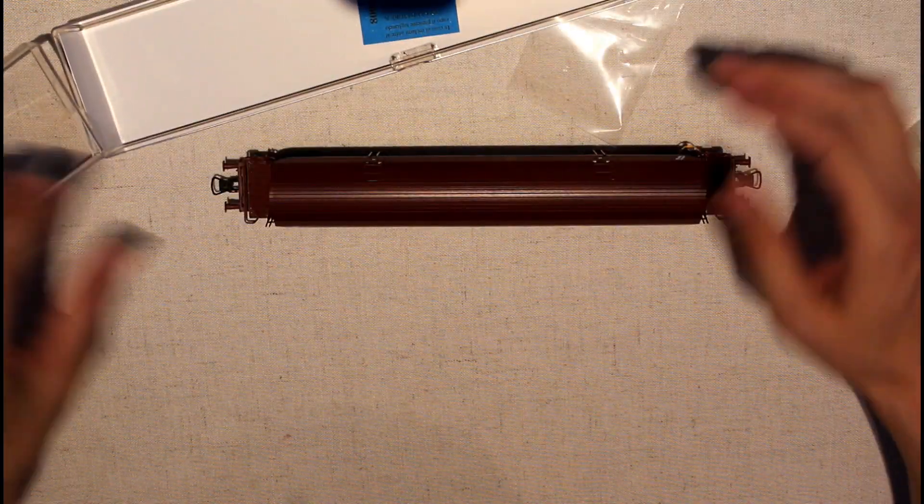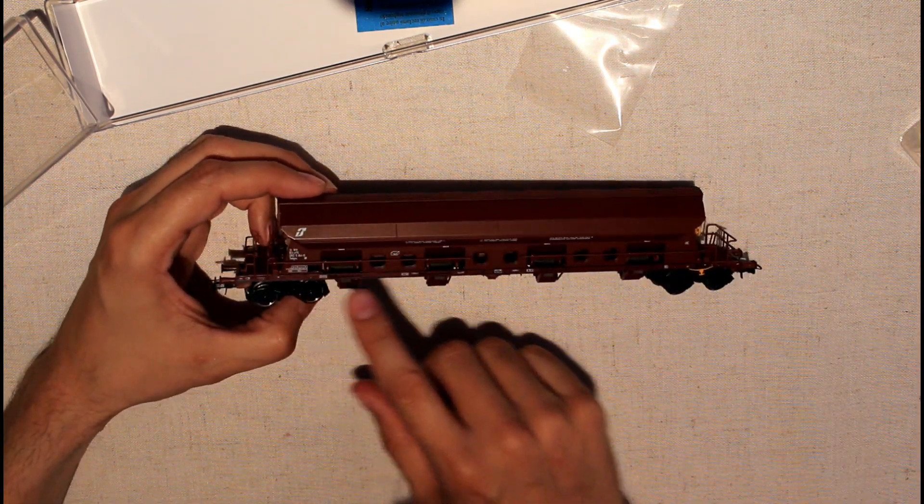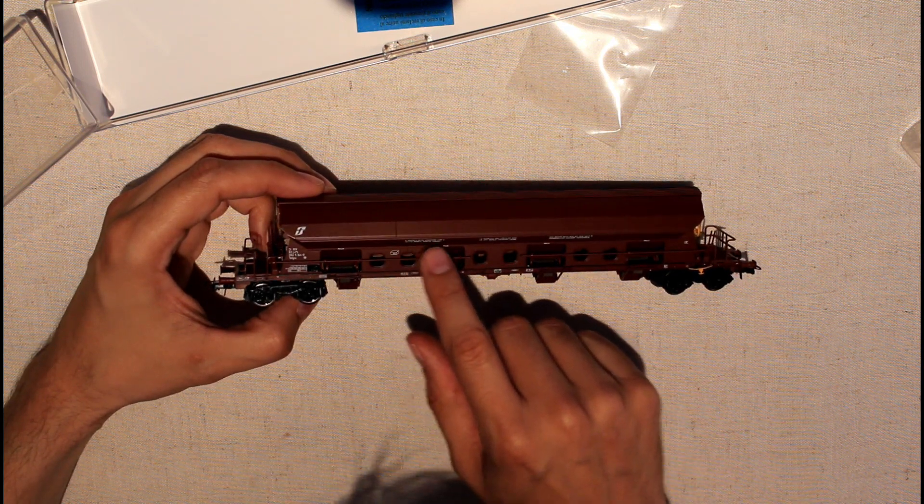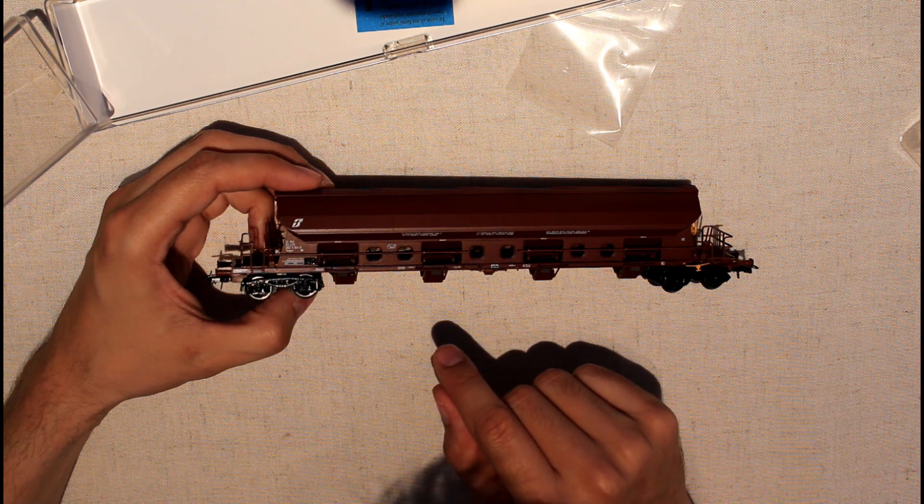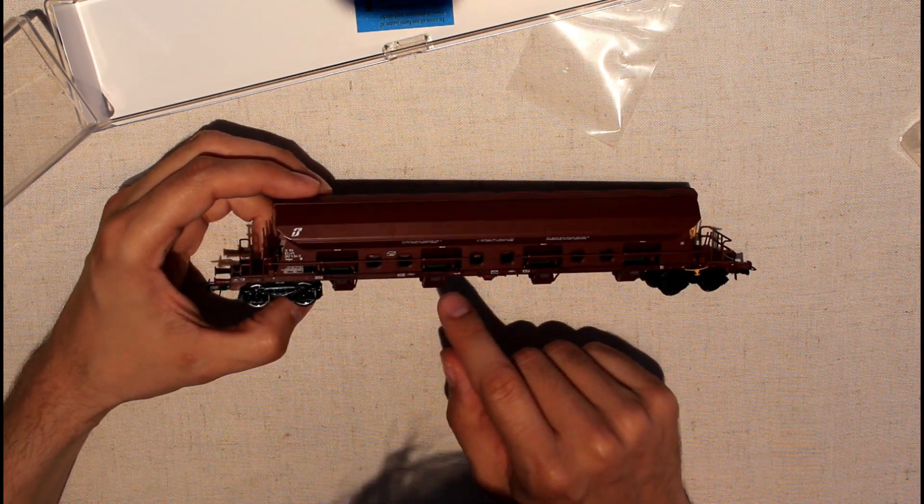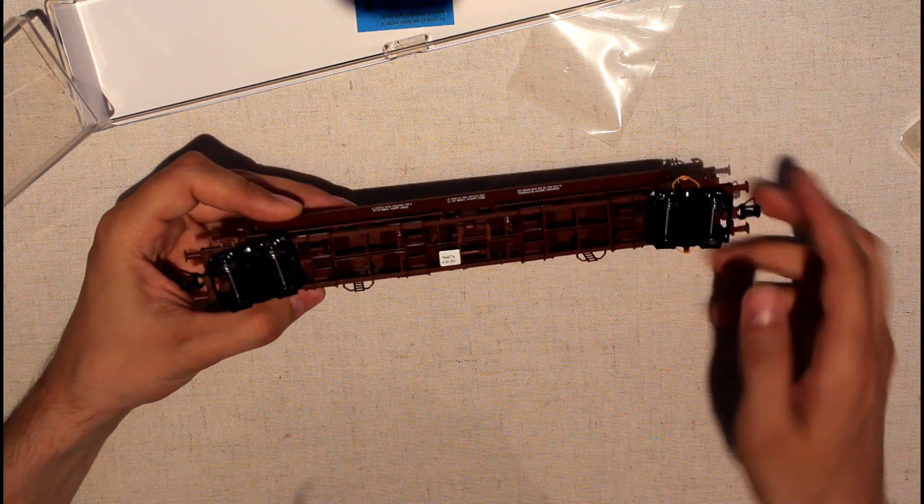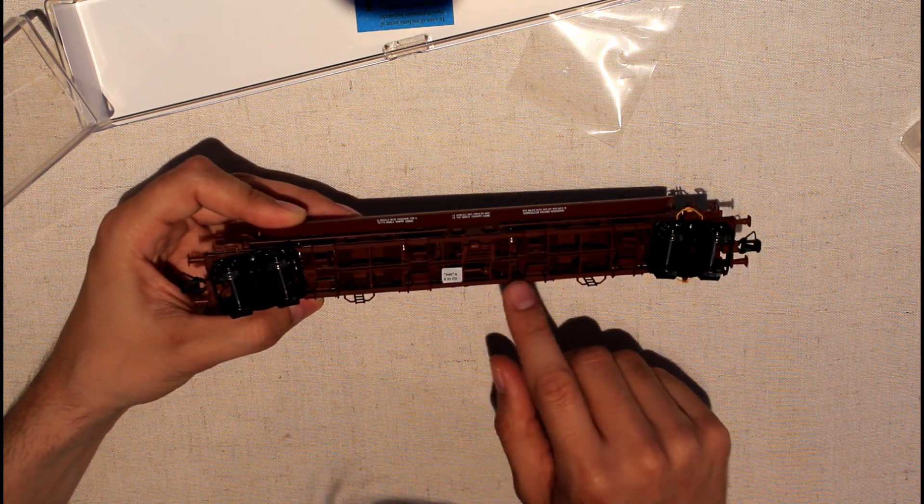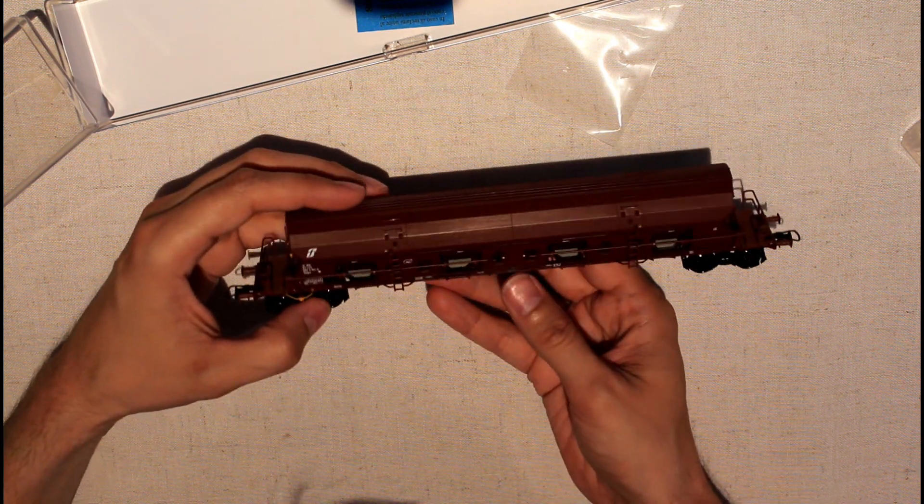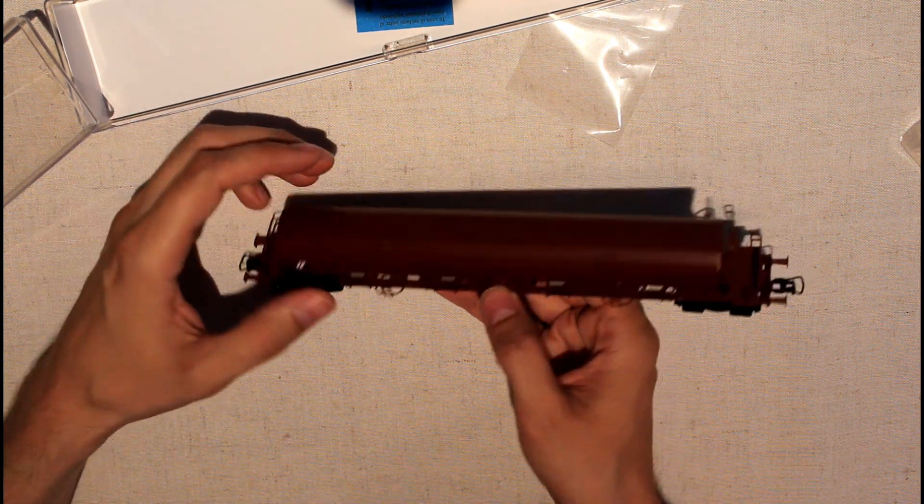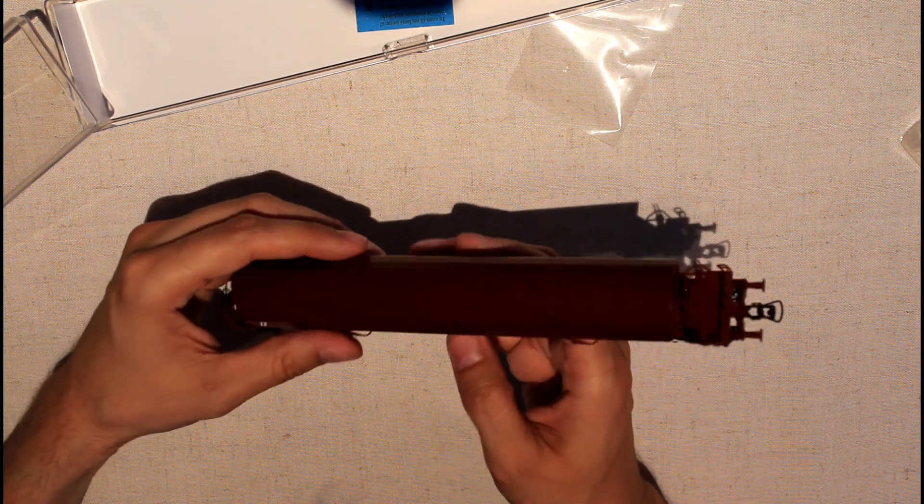If we look at the wagon, we can see the level of detail is very nice. Here is information in Italian, German, and French. Nice metal wheels also below. The amount of details is very high on this side. The same on the other side, you can see it's a very nice wagon.